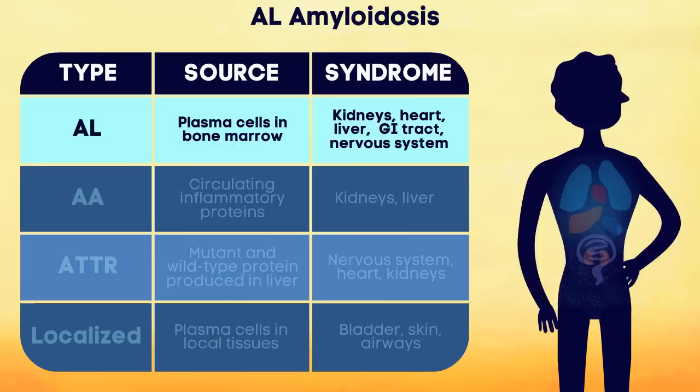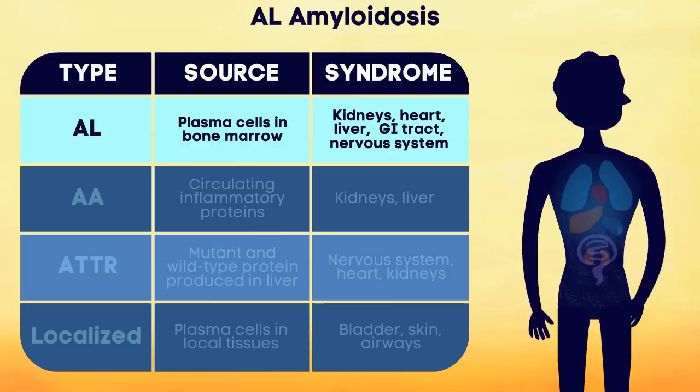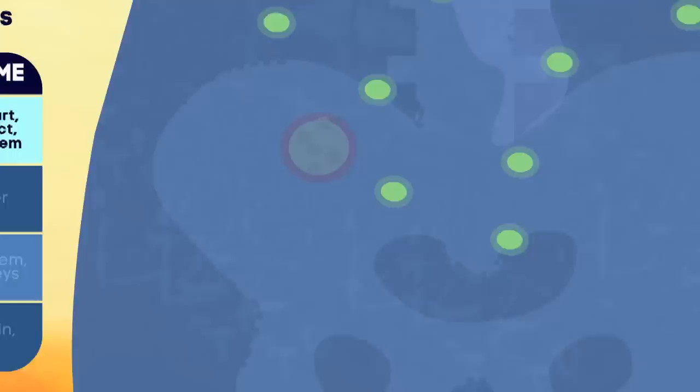In AL, or primary amyloidosis, the most commonly diagnosed form of the disease, the amyloid is derived from misfolded light chain antibodies. White blood cells in the bone marrow, called plasma cells, are producing too many defective light chain proteins. The kidneys, heart, liver, GI tract and nerves are most often affected.